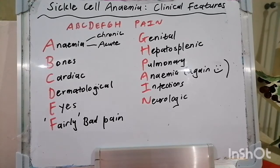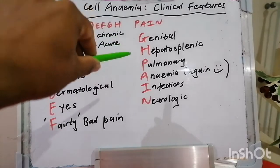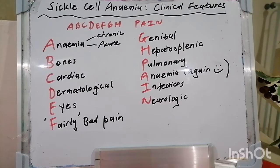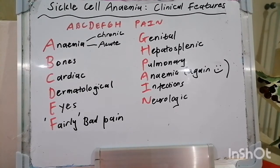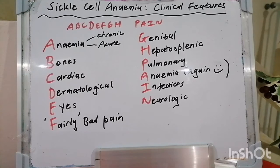Today we're talking about sickle cell anemia and the clinical features of sickle cell anemia and the mnemonic is A-B-C-D-E-F-G-H pain. So please allow me to favor you with a few dad jokes about pain. Did you know that during childbirth there comes a point where the woman experiences such excruciating pain that just for a moment she almost knows how bad it is to be a man who has the flu? And what do you call a cow that you sit on but it's super painful? You call it a couch.